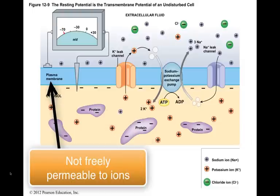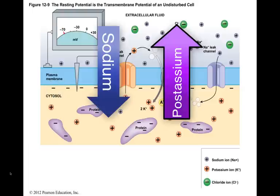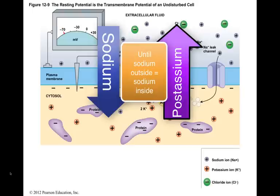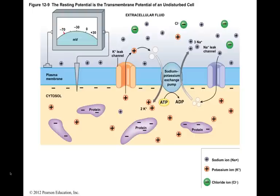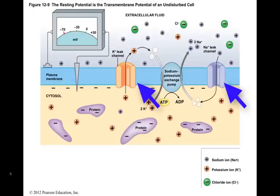The plasma membrane is not freely permeable to ions. If it was freely permeable, diffusion of ions would continue to occur until equilibrium was reached and an equal distribution of ions across the cell membrane was reached. However, the plasma membrane is not freely permeable, so equilibrium will not be reached. Ions can't cross the lipid portions of the plasma membrane; the ions can enter or leave the cell through membrane channels. There are many types of membrane channels, including leak channels. Ions move through leak channels when the cell is at rest, undisturbed, or at resting potential.